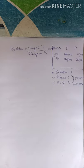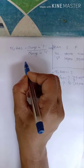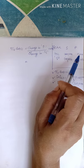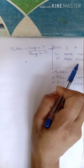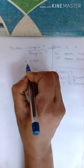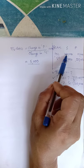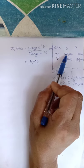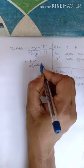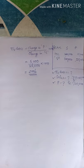First, you have to calculate PV ratio. PV ratio is change in profit divided by change in sales into 100. Change in profit: profit of 2002 is Rs. 15,000 and in 2003 it is Rs. 20,000, so change is Rs. 5,000. Change in sales: Rs. 1,40,000 and Rs. 1,60,000, so change is Rs. 20,000. Therefore, PV ratio is 25%.